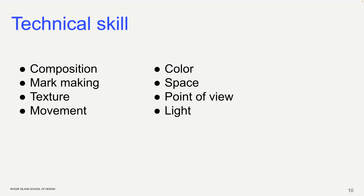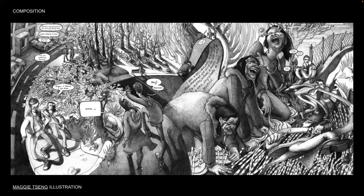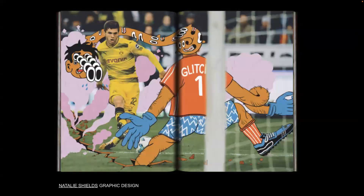Composition refers to how you arrange all the different elements within a piece. Our eye should move throughout the entire piece, not just the center. We see a lot of students who center their subject matter — be aware of that. Think about the composition and how your eyes can move throughout the entire framing.